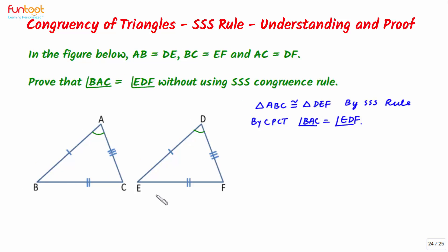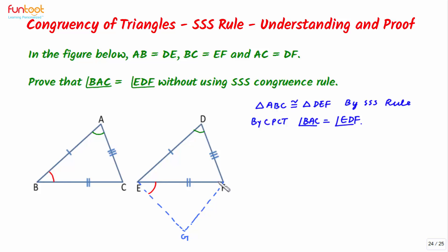For doing this, we will have to perform a construction. We will draw EG and FG in such a way that angle FEG is equal to angle CBA, and angle EFG is equal to angle BCA. Then we join DG.